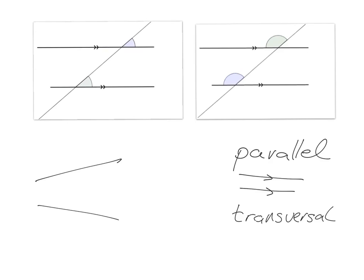Let's have a look at these two angles here. Can you see that they are both in the same position in relation to the parallel lines? They're above a parallel line to the right of the transversal. This one is above the parallel line to the right of the transversal. These kinds of angles we call corresponding because they sit in the same place relative to the parallel lines and the transversal — above and to the right, above and to the right.